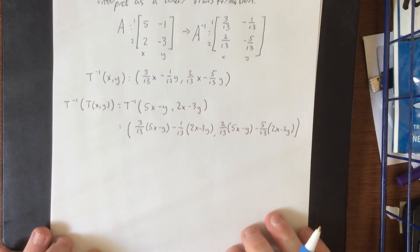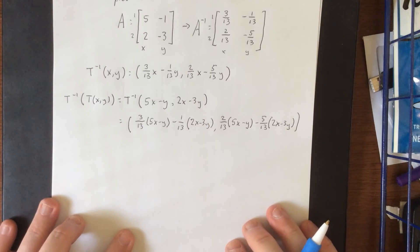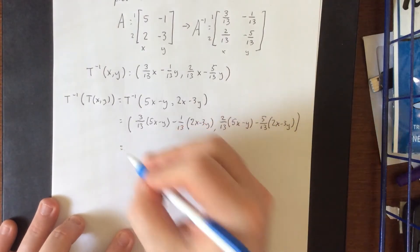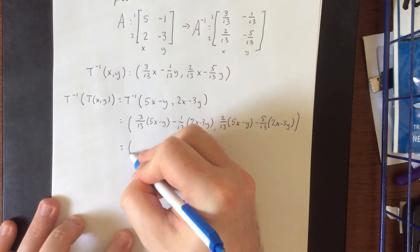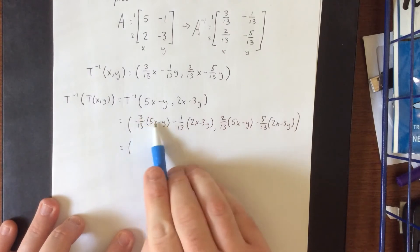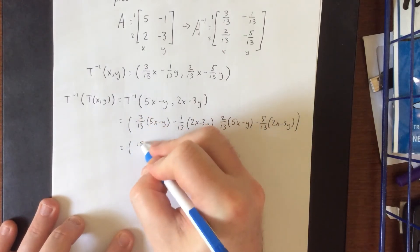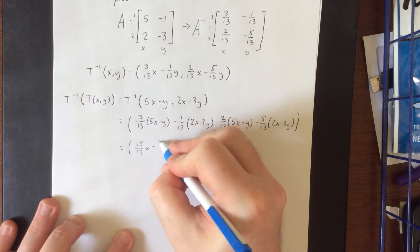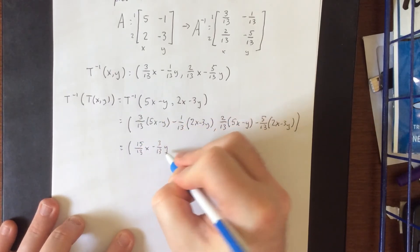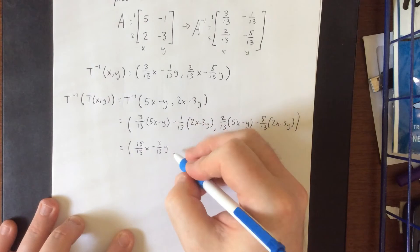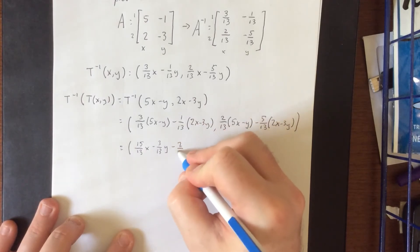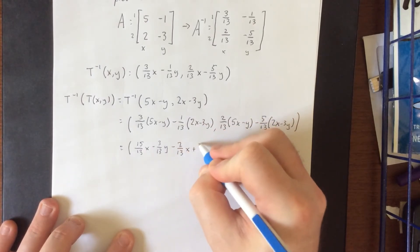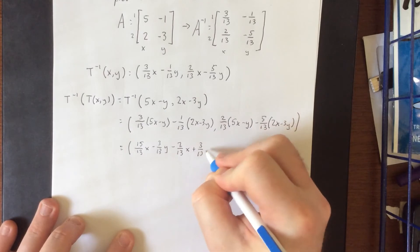Allegedly this should be the identity transformation. Let's verify. So for the first component, for the x component, I am seeing 3/13 times 5, that'll be 15/13 x, and distribute, that'll be minus 3/13 y. Distributing the minus 1/13, that'll be minus 2/13 x plus 3/13 y.